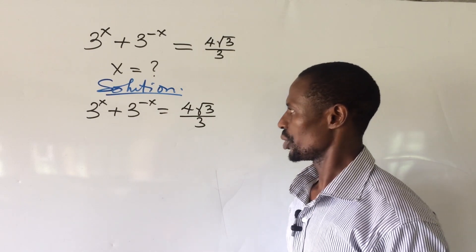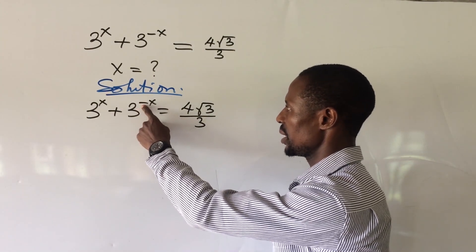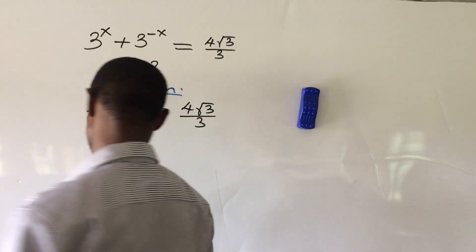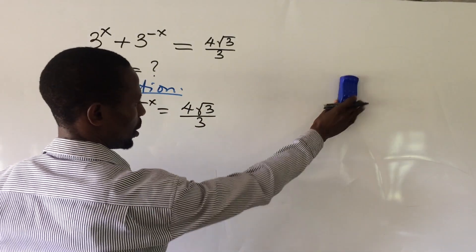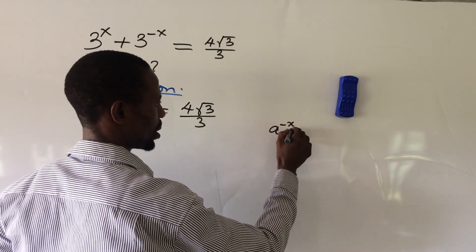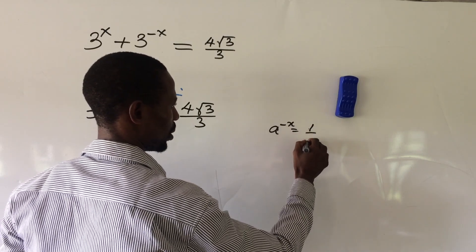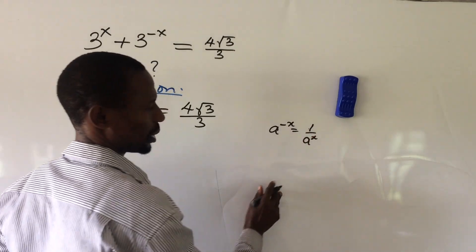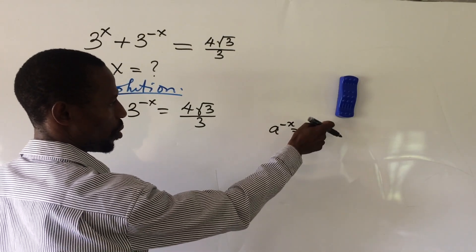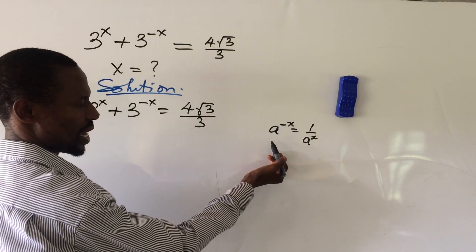The first thing we're going to do here is to handle this negative exponent. According to the law of indices, if we have a to the power of minus x, this equals 1 all over a to the power of x. In other words, the 1 under the division sign has taken the place of the minus sign.